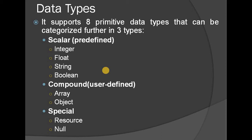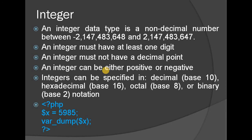The 3 categories are scalar or predefined, compound or user-defined, and special types of data types. The first one is integer. It is a non-decimal number.